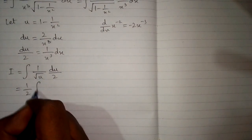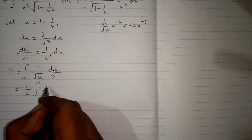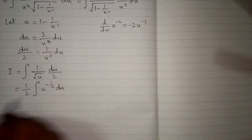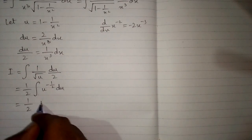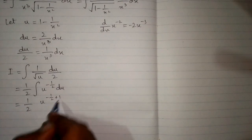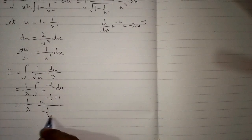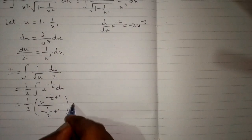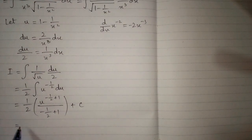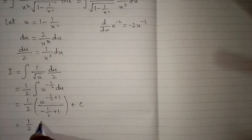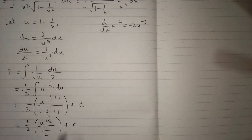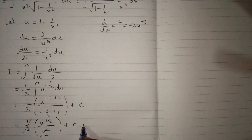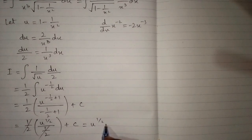This can be written as half times the integral of u to the power minus 1 upon 2 du. Applying the power rule of integration, we get 1 upon 2 times u to the power 1 upon 2, divided by 1 upon 2. This simplifies to half times u to the power 1 upon 2, and then half and half cancel, giving us u to the power 1 upon 2 plus c.